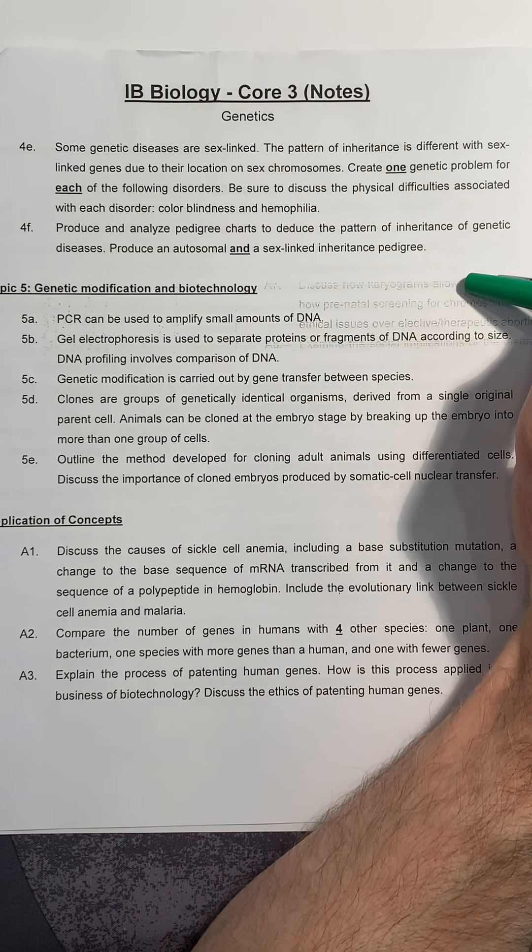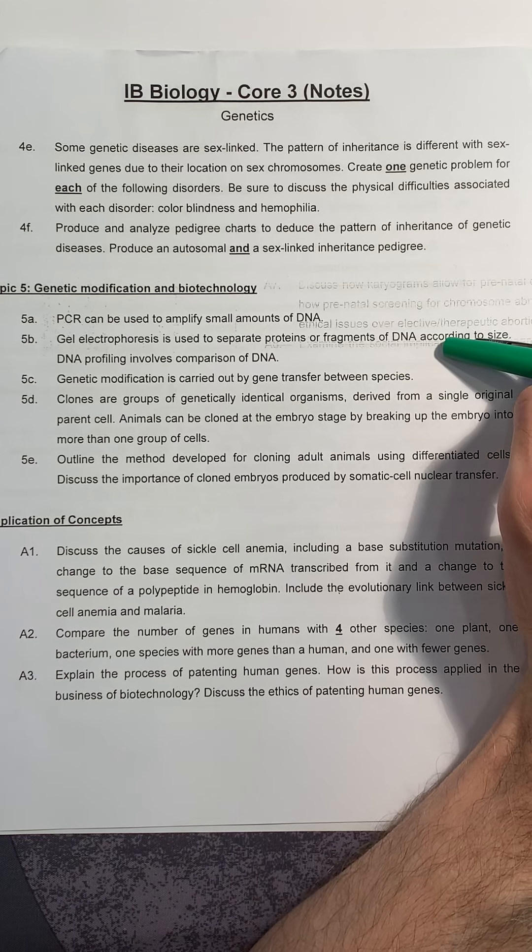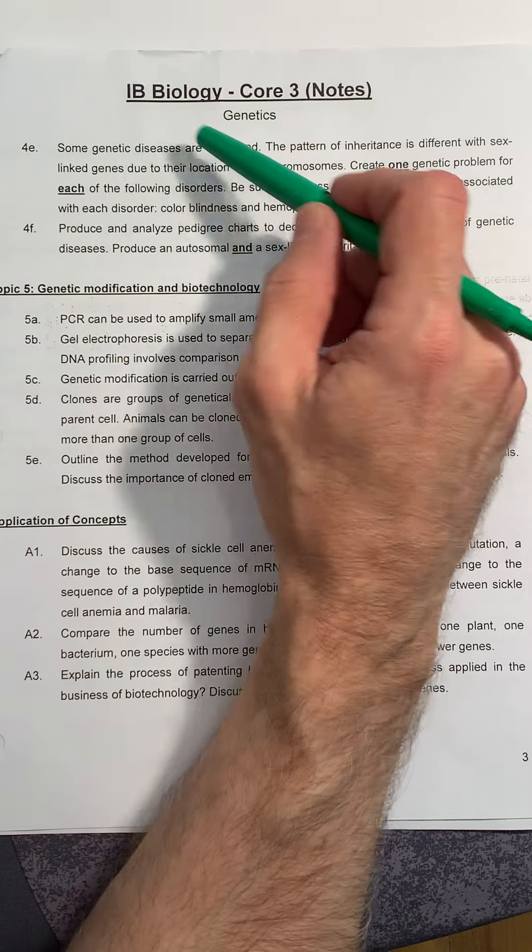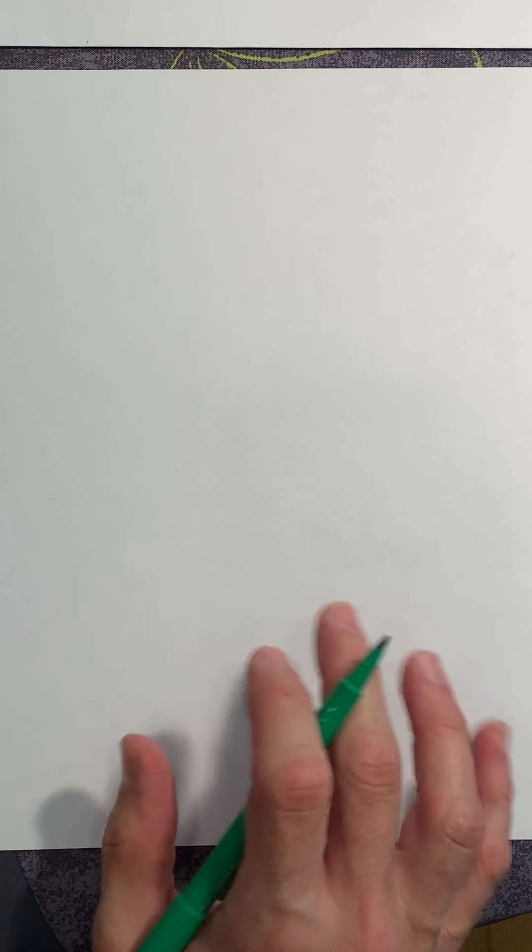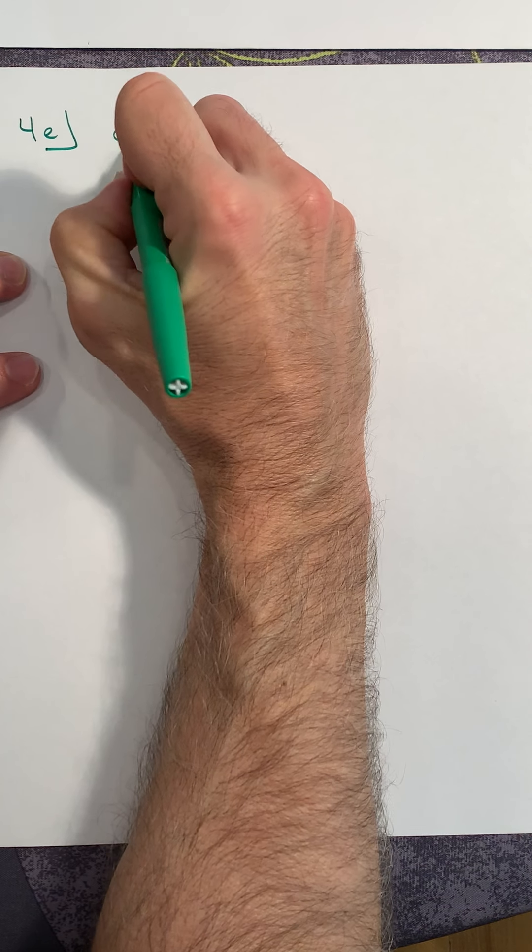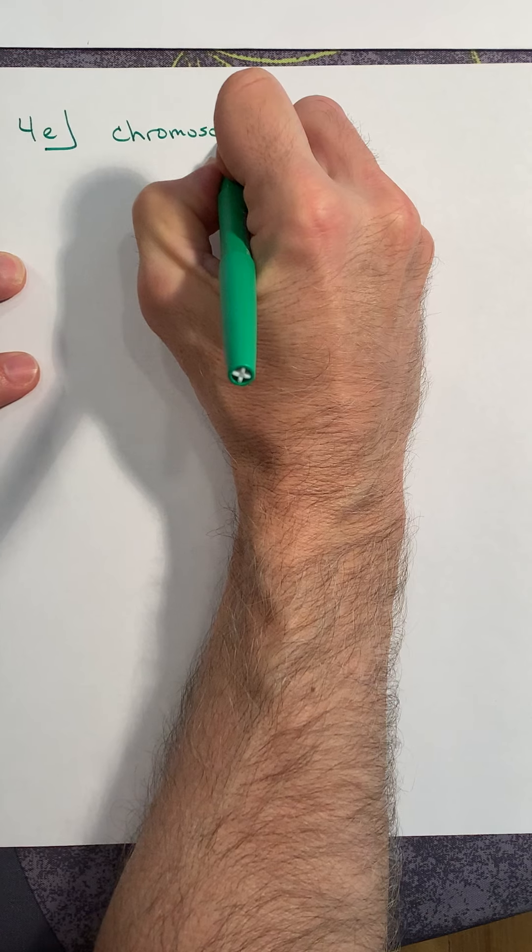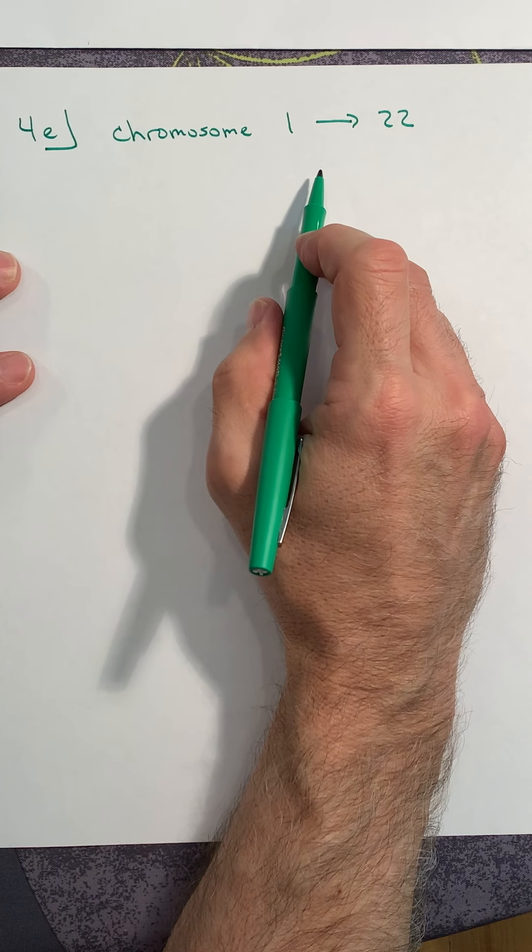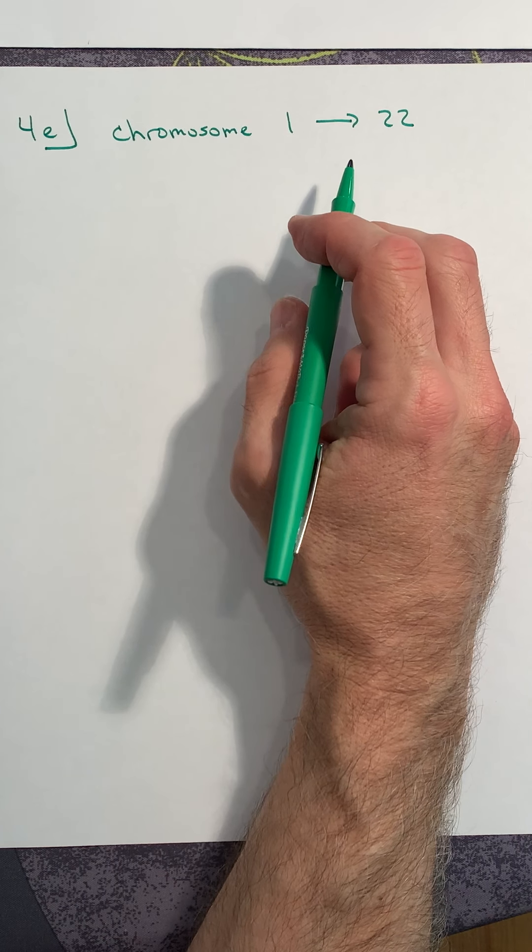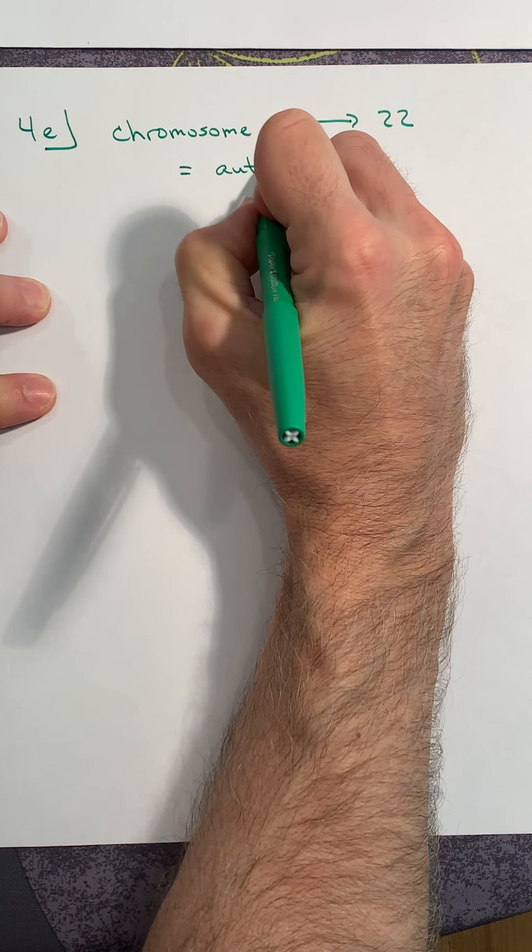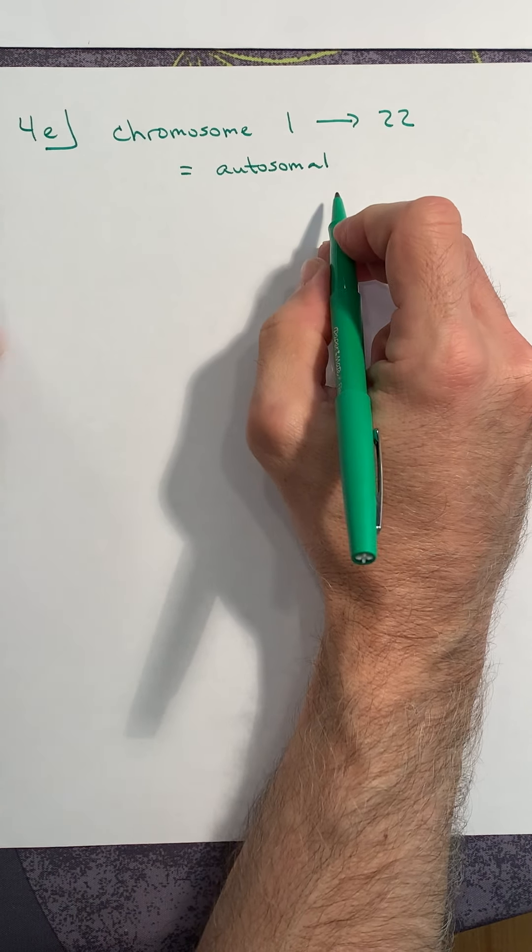When we were talking about cystic fibrosis, Tay-Sachs, sickle cell anemia, Huntington's, those are all autosomal. On 4e, we're going to switch gears and get into sex linkage. We need to be really clear about autosomal versus sex-linked. When you're talking about any allele that is found on a chromosome 1 through number 22, any allele on chromosome 1, 5, 9, 21, we call autosomal.